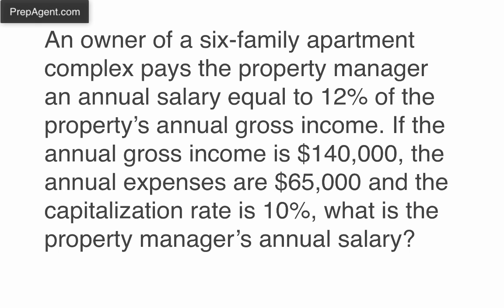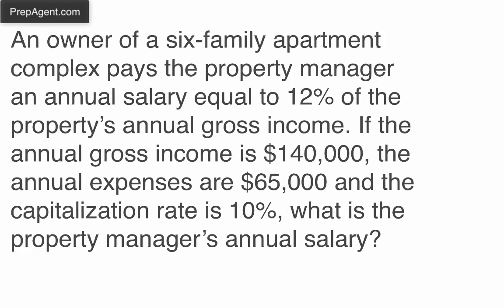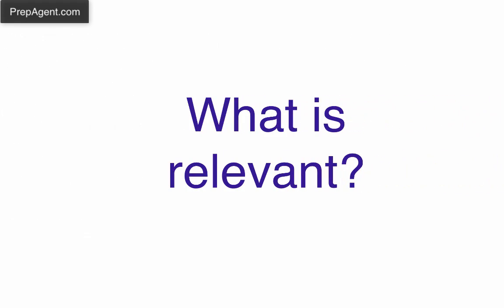Now, I mentioned this is pretty easy. You may be thinking, this isn't easy — there's a million numbers: 12%, $140,000, $65,000, 10%. How does that all work together? Well, the answer is, it doesn't. This question has a lot of things that aren't relevant, so you have to find out what is relevant.